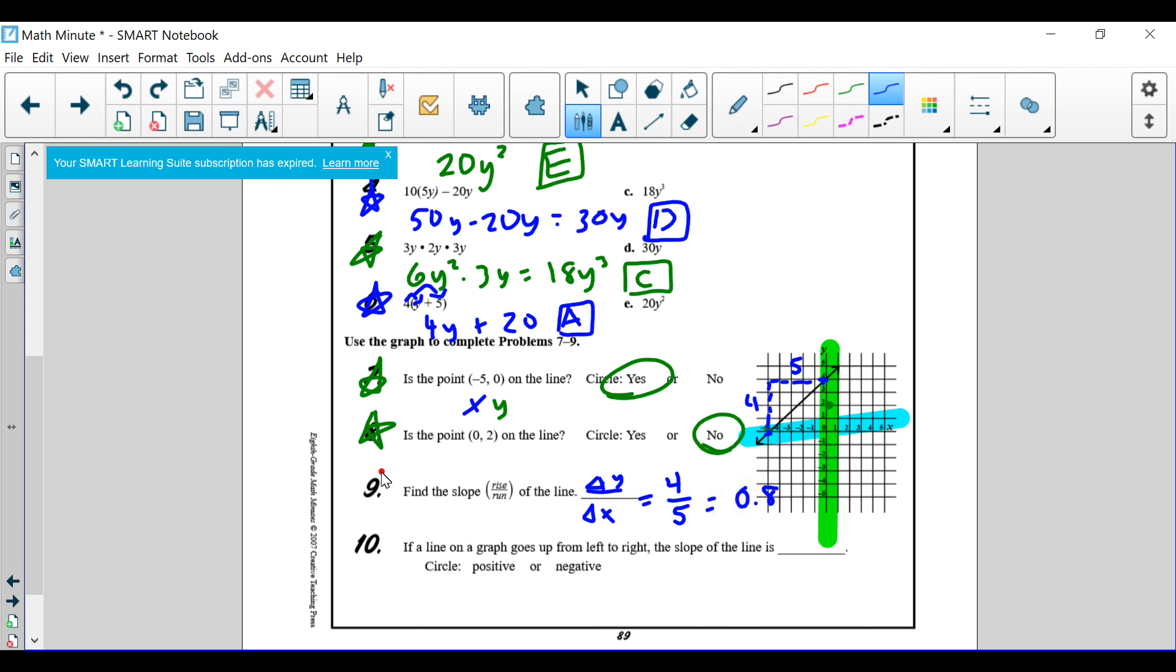Now, hopefully you got both of those answers. Make sure to box your answers after you got them. And then finally, it says if a line on the graph goes from left to right, the slope of the line is what? Since it's going up and it stays there, it is positive.